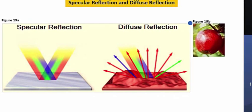For example, if we look here at figure 19B, when white light hits an apple, primarily red wavelengths are reflected, while much of the other wavelengths of light are absorbed.